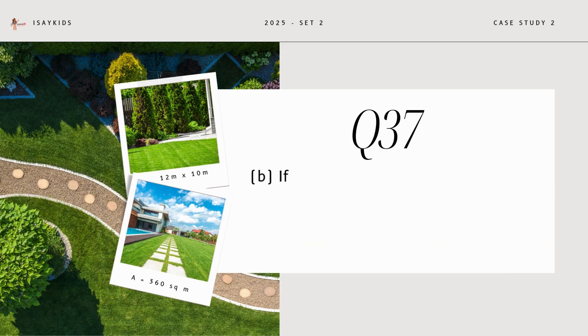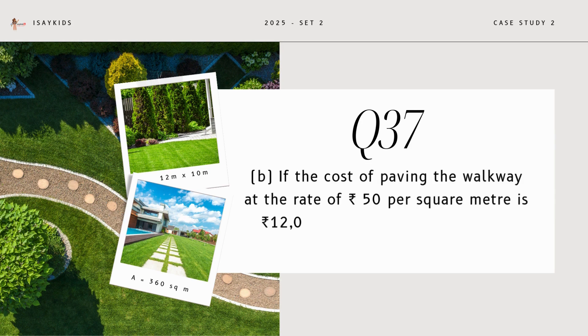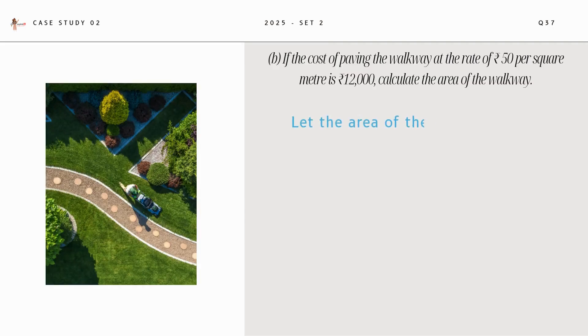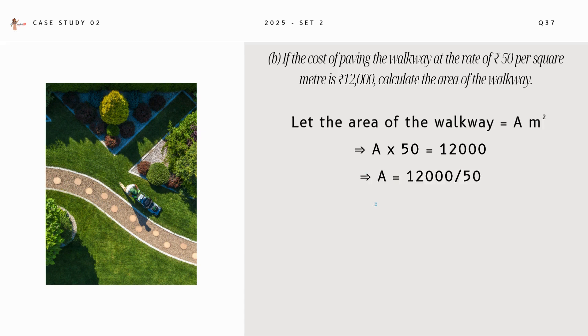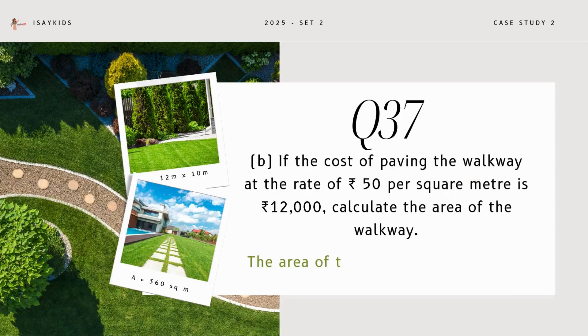Next part is, if the cost of paving the walkway at the rate of Rs. 50 per square meter is Rs. 12,000, calculate the area of the walkway. Let the area be A. So, A times 50 would be 12,000 which gives us A as 240 meters square. Thus, the area of the walkway is 240 square meter.